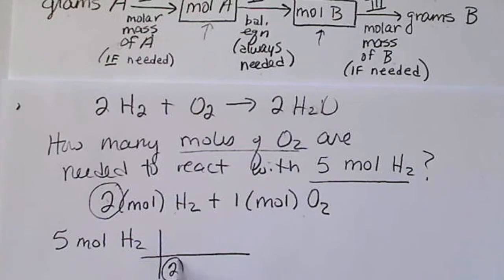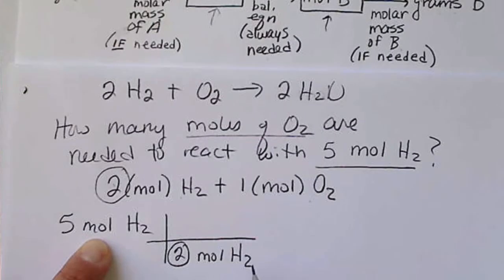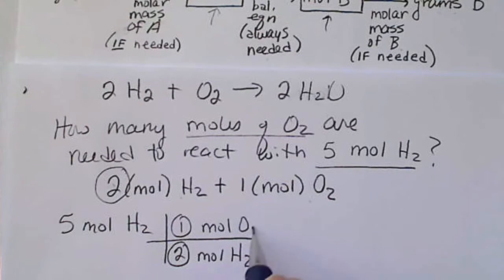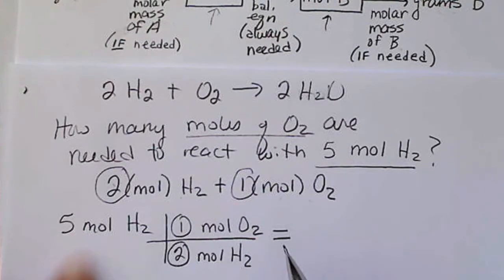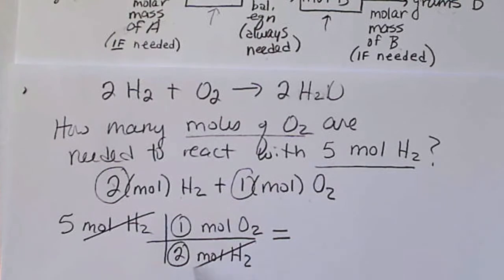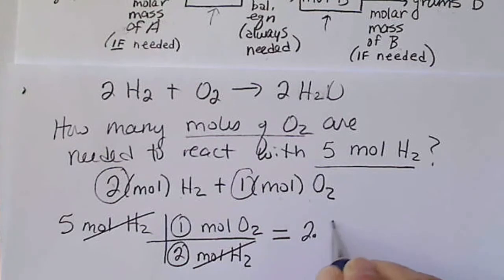So two goes down here because the unit mole of hydrogen has to cancel, and then one mole of oxygen goes here. And so this question gave us information in terms of the recipe and we're asked information, so it's a one-step calculation only. So this would end up being 2.5 moles of O2.